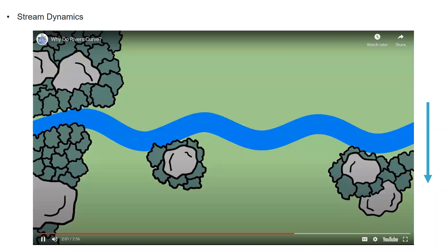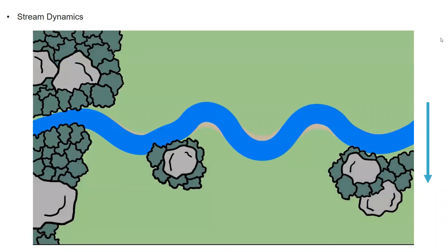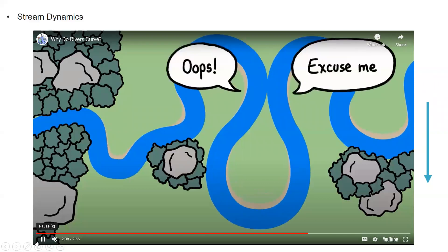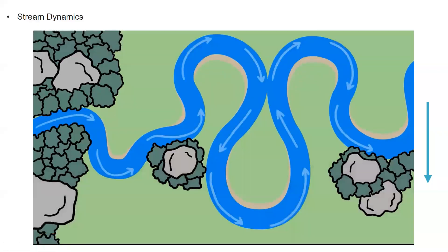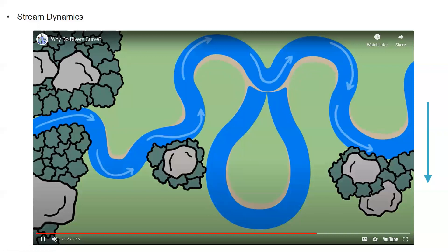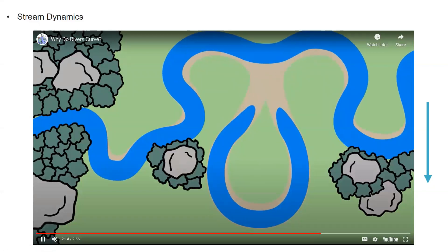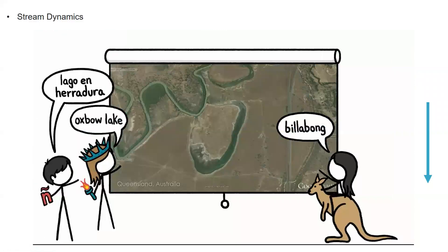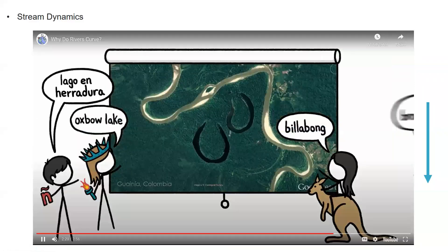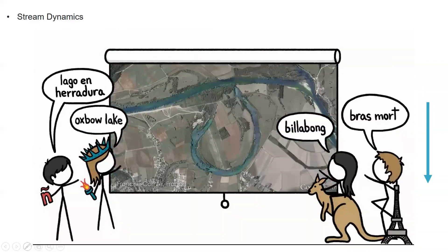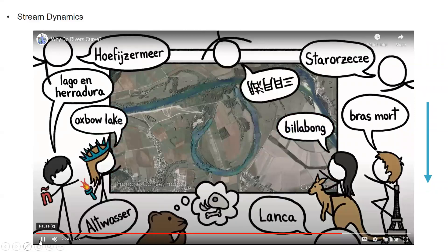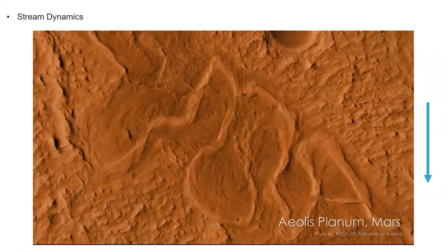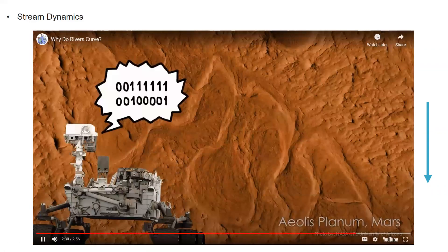As long as nothing gets in the way of a river's meandering, its curves will continue to grow curvier and curvier until they loop around and run into themselves. When that happens, the river's channel follows the straighter path downhill, leaving behind a crescent-shaped remnant called an oxbow lake — or a billabong, or un lago en herradura, or un brazo. We have lots of names for these lakes since they can occur pretty much anywhere liquid flows or used to flow.